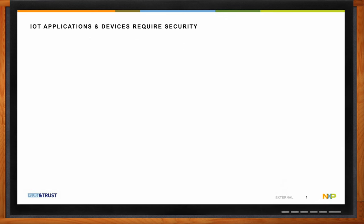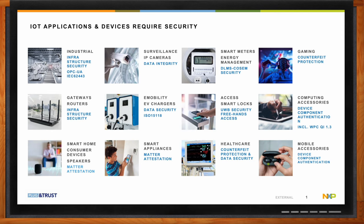There are, in fact, a lot of IoT applications and devices requiring security today. Starting with industrial, which is very prominent — you need security for the infrastructure and also for standards like OPC UA or IEC 62443. IP cameras also have a big requirement on security, especially for data integrity. Smart meters and energy management also have high security requirements, standardized through DLMS COSEM. In gaming, you need security for counterfeit protection. Gateways and routers need to secure the complete infrastructure. And one very new prominent application is EV chargers and e-mobility, where the data needs to be secured and a lot is standardized in ISO 15118.